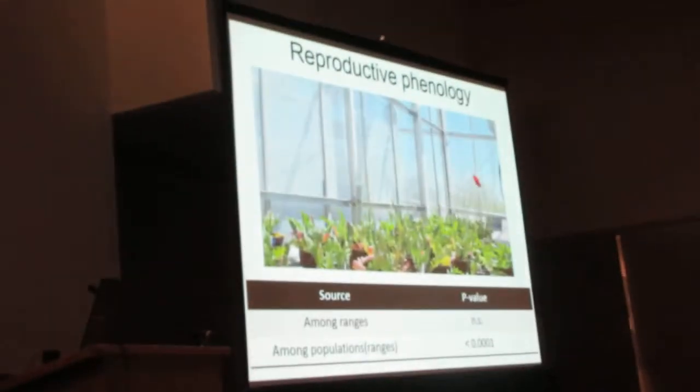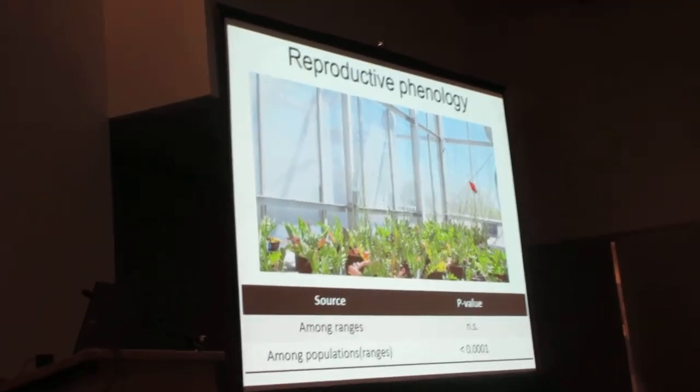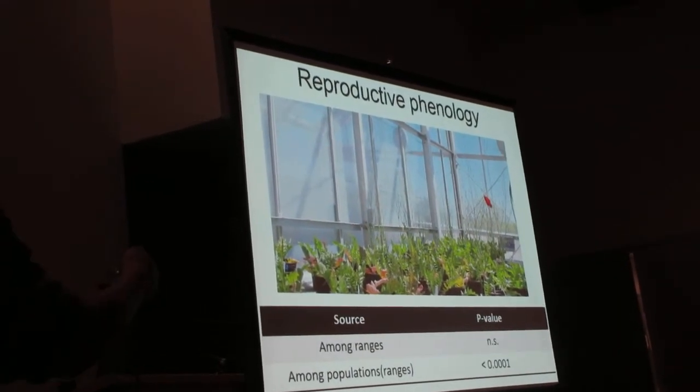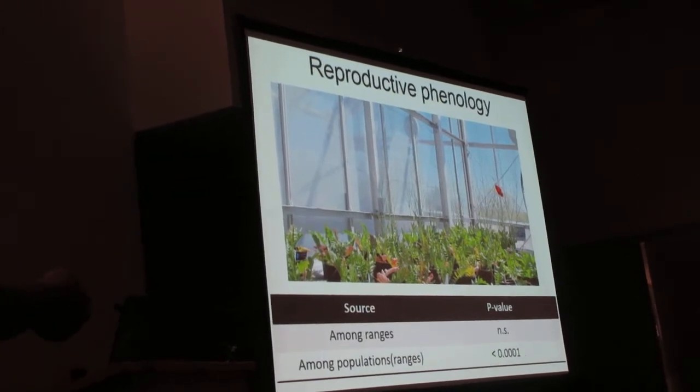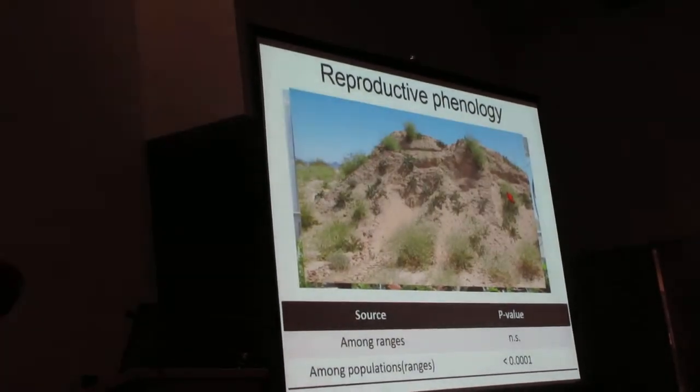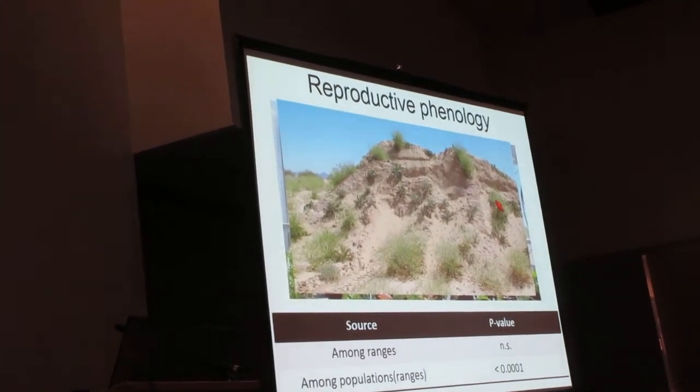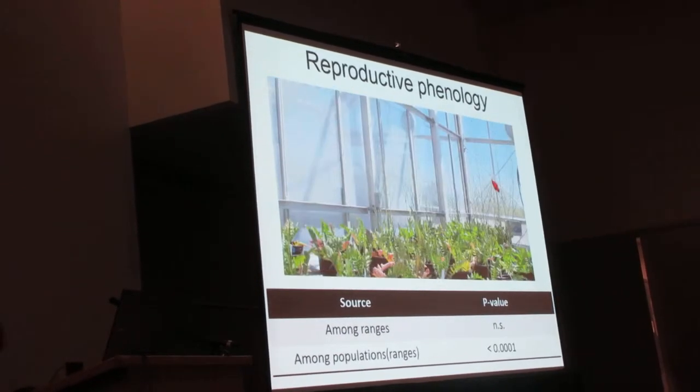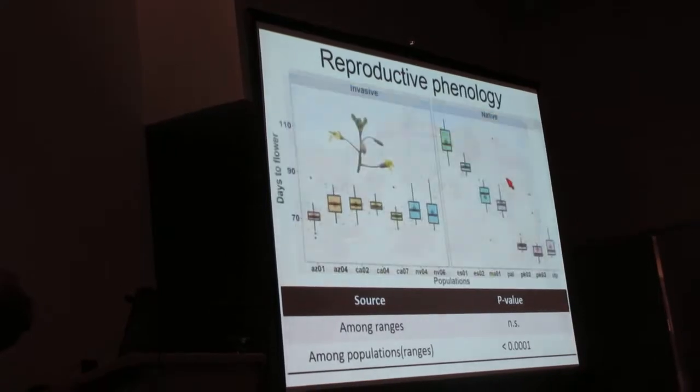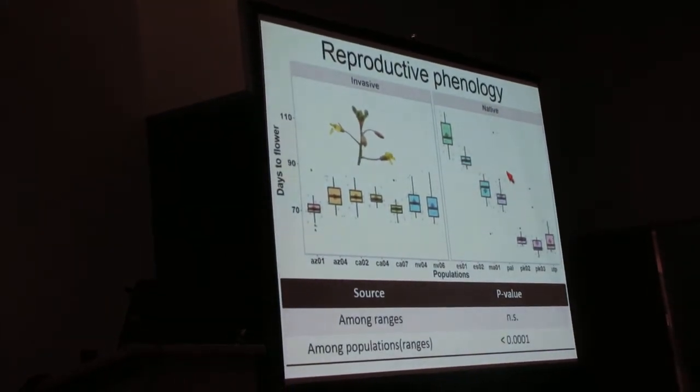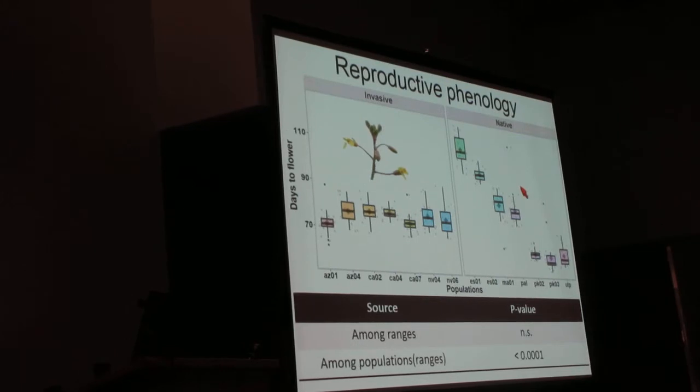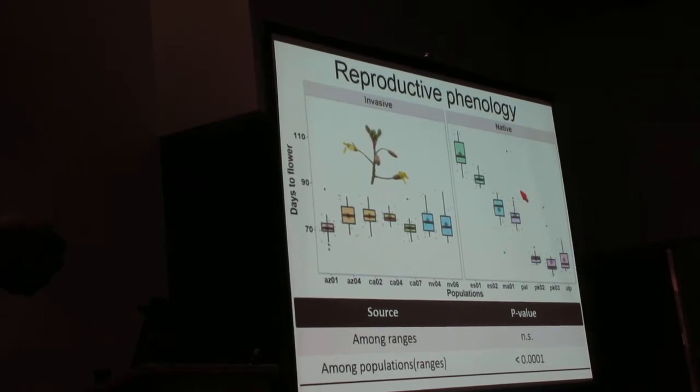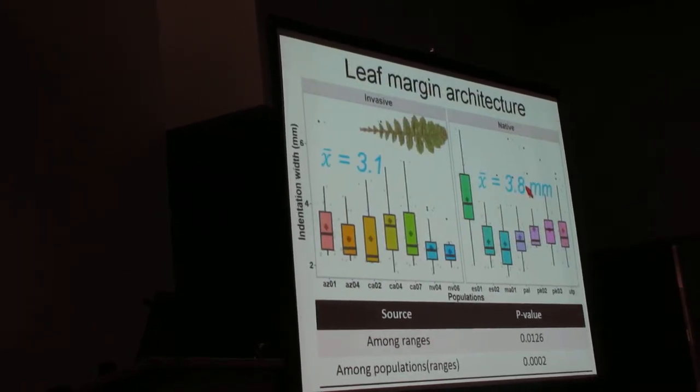Just by looking at plants in the greenhouse, I can already see that they have different reproductive phenology in the common greenhouse. Even in my field sites where I collected them, you can already see in this picture that some plants are already seeding, some plants are just developing flowers. I see the same pattern where there's a lot of variation in the native range, but very little variation, relatively, in the invasive range.